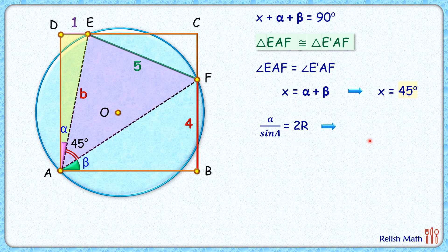So we'll get 5/sin(45°) = 2R. And for those who are not comfortable with this extended sine rule, in the end I'll discuss an alternate solution or basically a derivation for this rule, which is just a 15-second job.